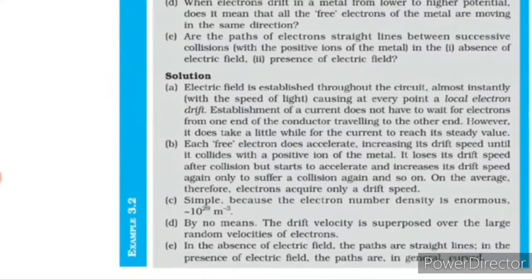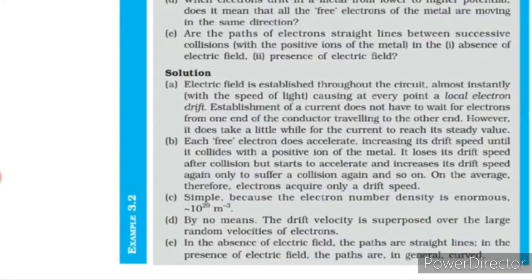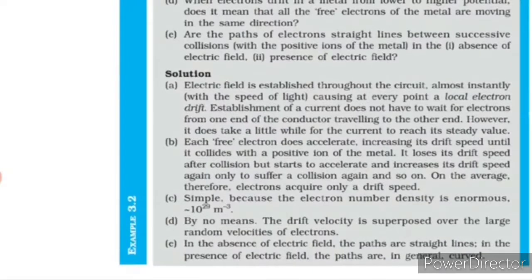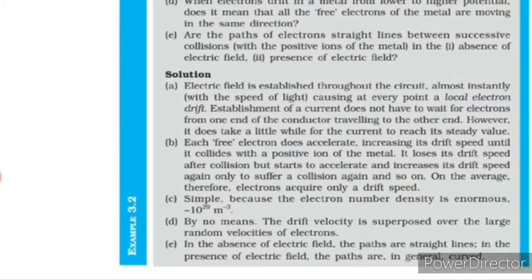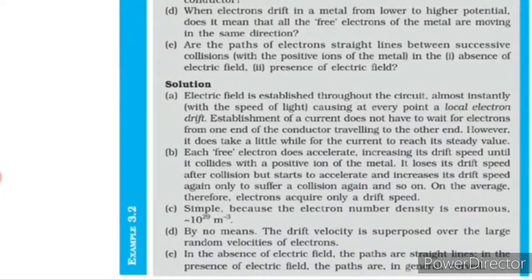Are the paths of electrons straight lines between two successive collisions with positive ions? In the absence of an electric field, electrons move along straight-line paths between collisions. But in the presence of an electric field, the motion is accelerated, and for accelerated motion the path becomes curved.